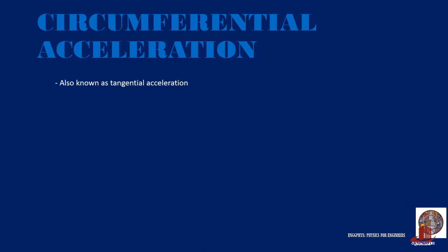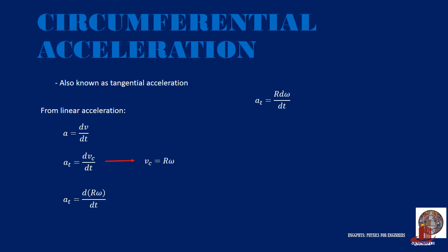Circumferential acceleration is also called tangential acceleration. We can derive it using linear acceleration: a equals dv over dt. By substituting circumferential velocity v_c, which equals r·omega, we arrive at a_t equals d(r·omega) over dt. Since radius r is a constant, we arrange the formula as a_t equals r times d(omega)/dt. From the previous discussion, alpha equals d(omega)/dt, so circumferential acceleration can be computed as a_t equals r·alpha, in meters per square second.